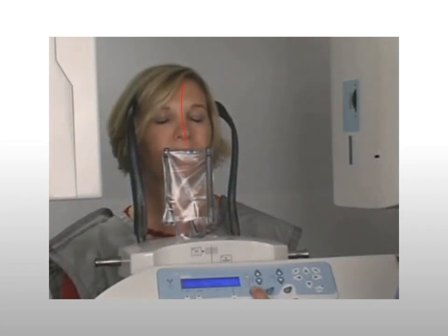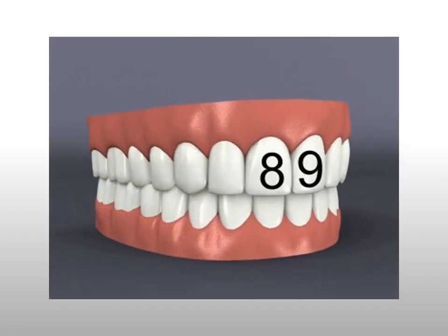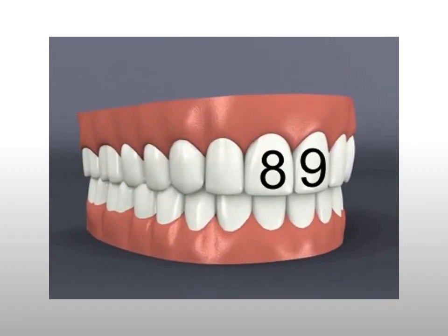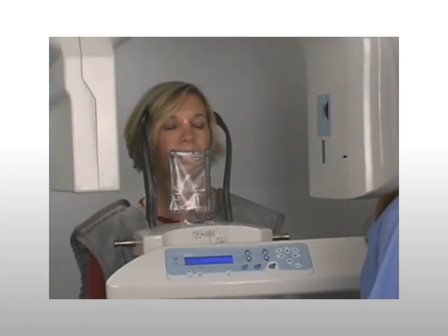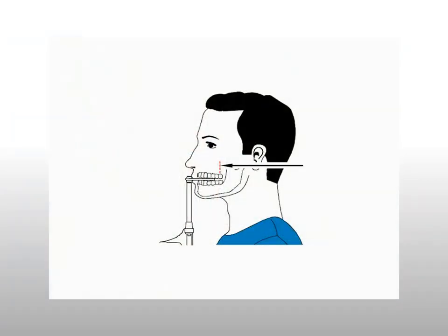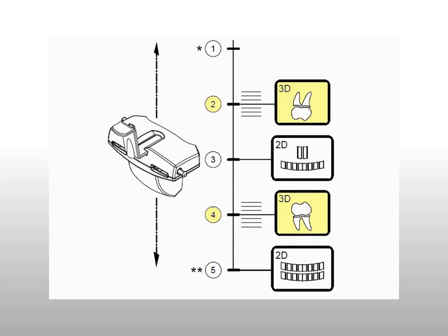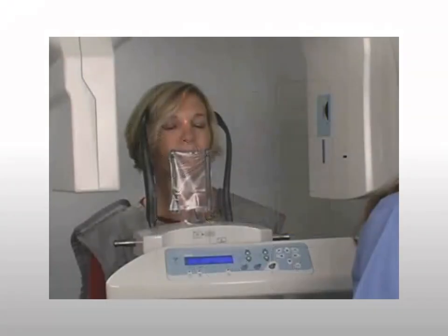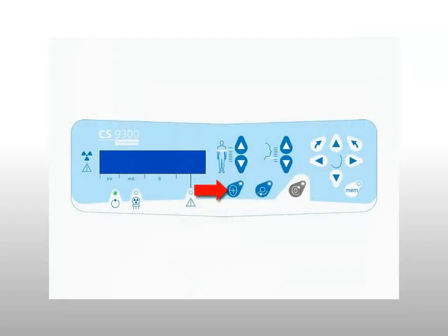Use the mid-sagittal laser to center the patient and the machine — the laser should run straight down the patient's midline, with teeth 8 and 9 as your guides. Use the center of rotation laser to check the center of the area of interest. Adjust the 3D field of view laser, if needed, to focus on either the maxilla or the mandible. Adjust the patient's head using the lasers to guide you. If you need additional time, press the laser beam button again.